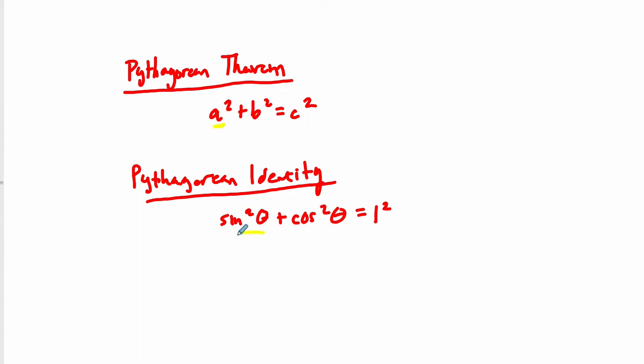You can see the similar structure between these two: we have a², sine squared; b², cosine squared; and c², one squared. That similarity is not accidental — it's because they're connected.